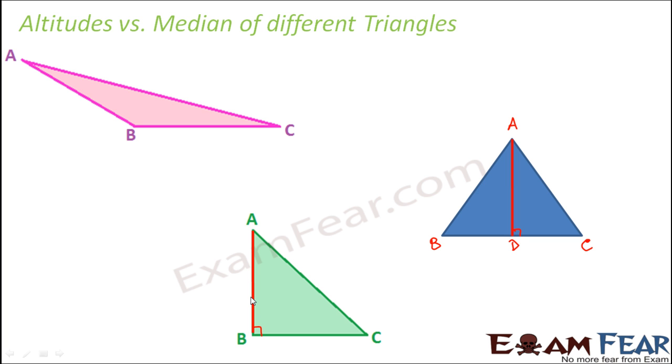So basically one of the sides of the triangle has become the altitude. So AB which is one of the sides of this right angle triangle is the altitude for the triangle. Perfect.